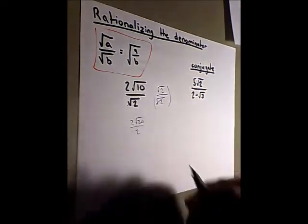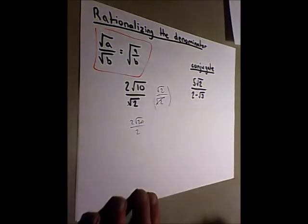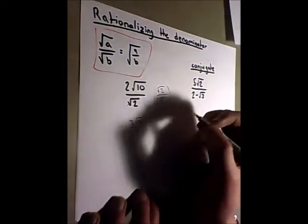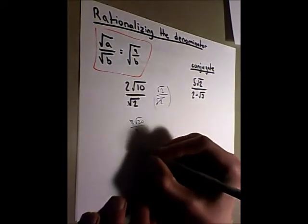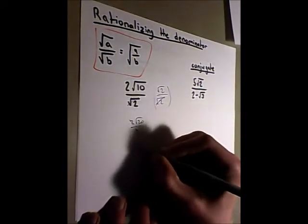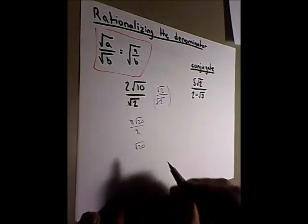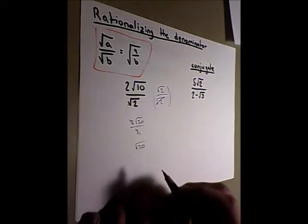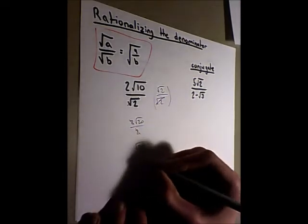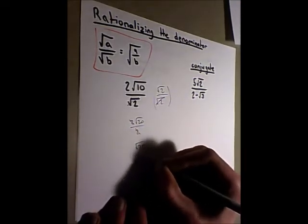And to root 2, we simplify this and we have these 2 cancels out. So the answer here is just a square root of 20. And we aren't done yet because we can still simplify this more and convert it to a mixed radical, which is just 2 root 5.